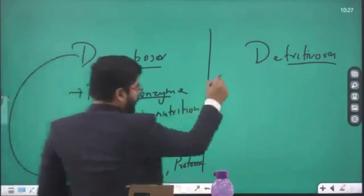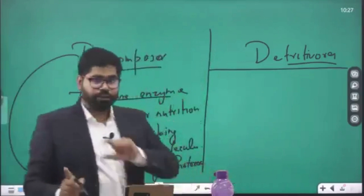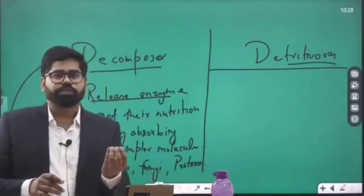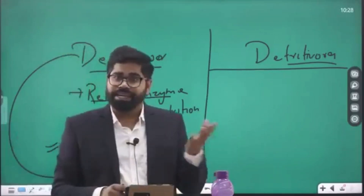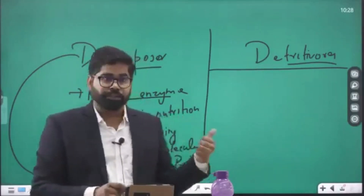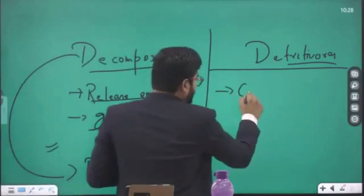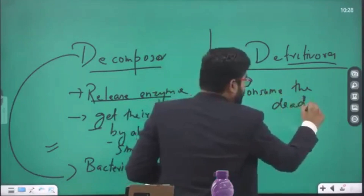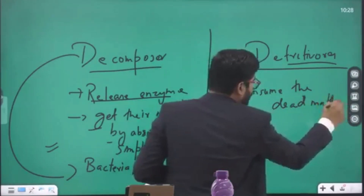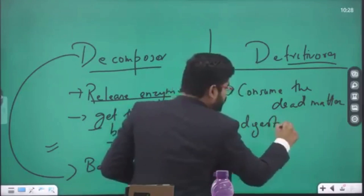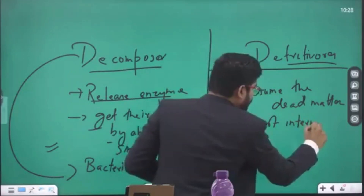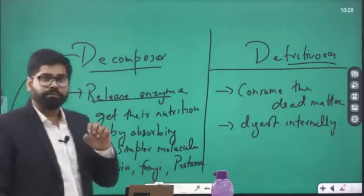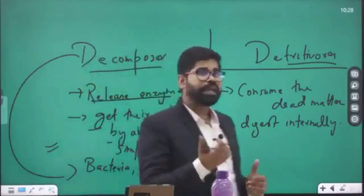Now, detritivores — again the same thing: they also feed on dead and decaying matter, the source of food is the same. But they do it differently. They consume the dead matter and digest it internally, unlike decomposers. Here you will find relatively bigger organisms.